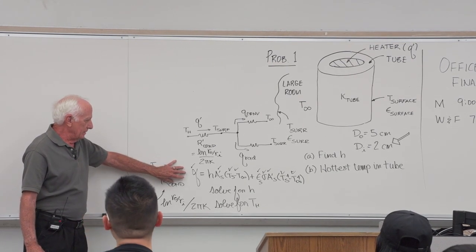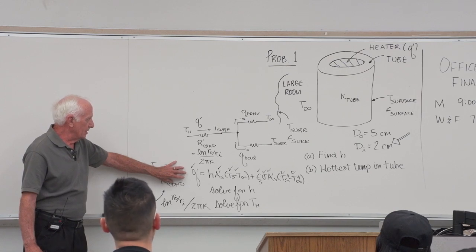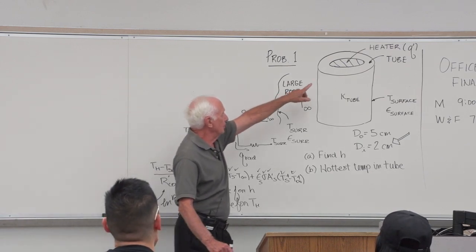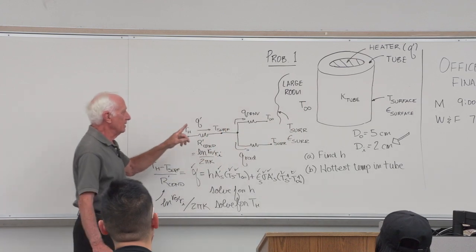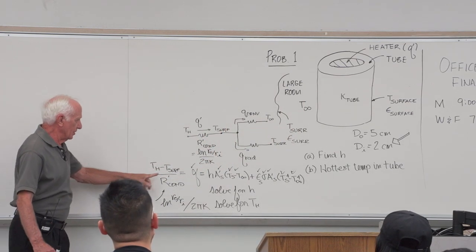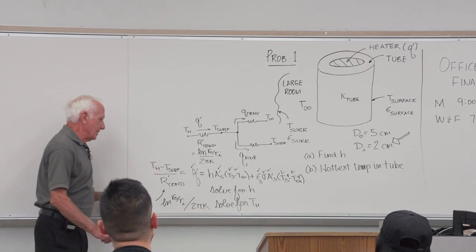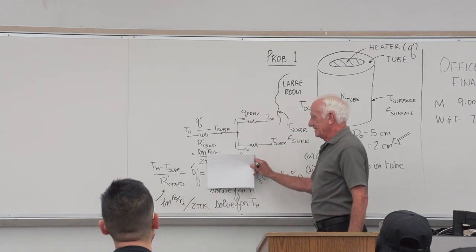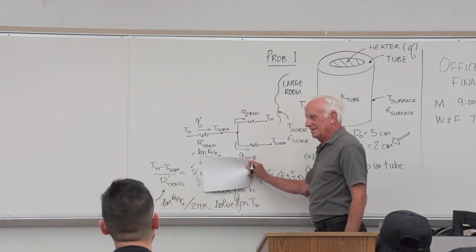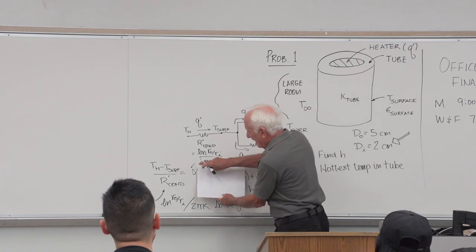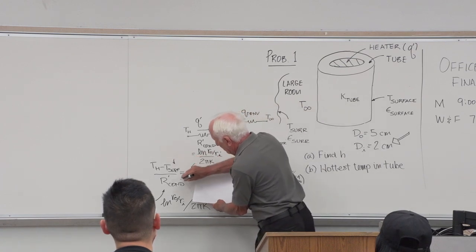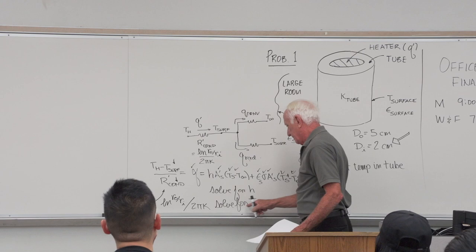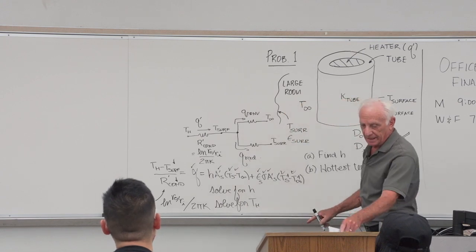For part B — the hottest temperature in the tube — that's the inside of the tube where it touches the heater. Write the conduction equation with Q-prime. I know Q-prime, I know the geometry, I know the conductivity. Solve for T_H right there. Done.